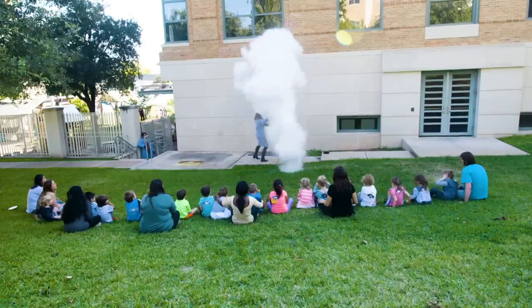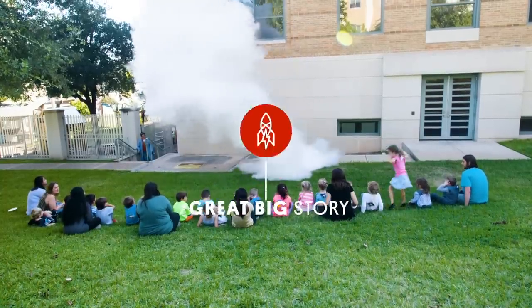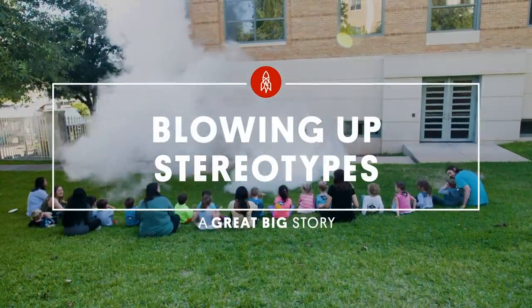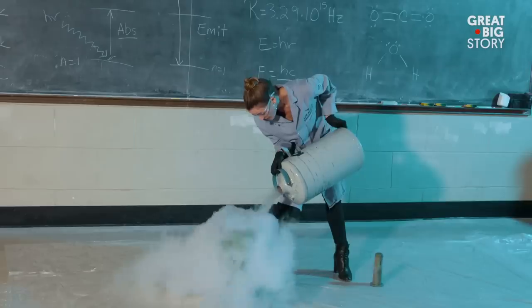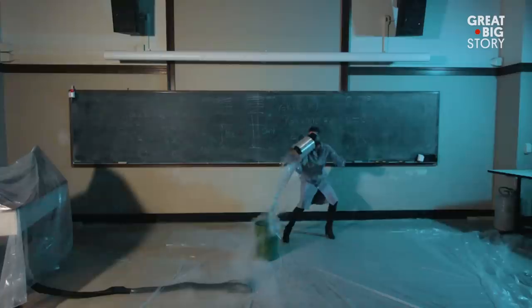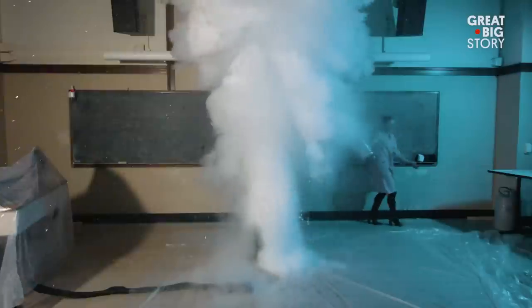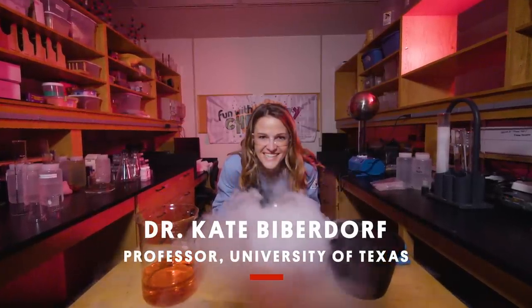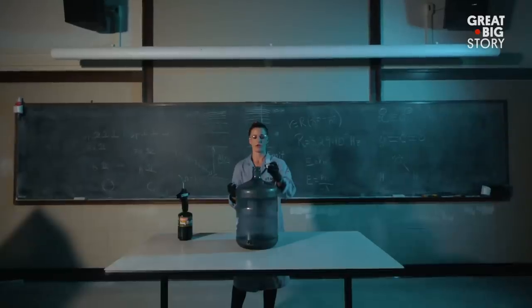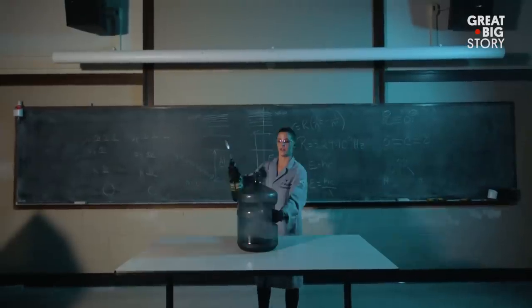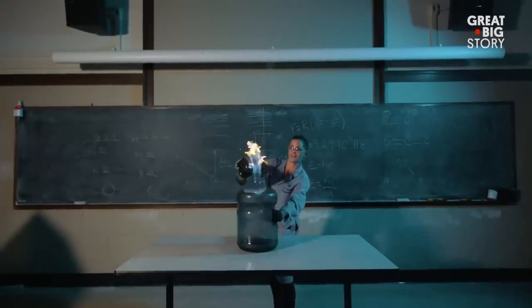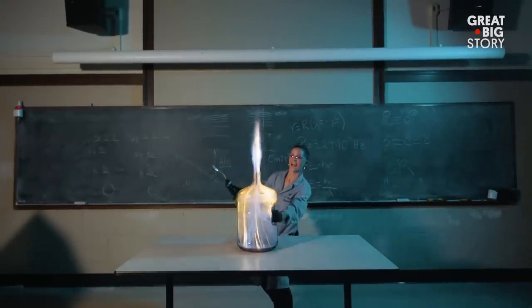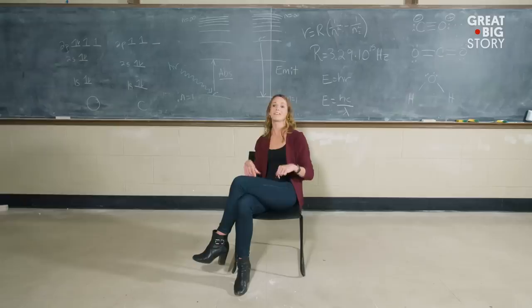My name is Dr. Kate Biberdorf and I am a lecturer at the University of Texas at Austin. I'm trying to break the stigma of what a stereotypical scientist looks like. So my thing is I am not wearing a bow tie, I'm not wearing suspenders, I don't have some frumpy cardigan on. I'm just some regular girl who likes to play with fire and I also really like designer shoes and that's okay.